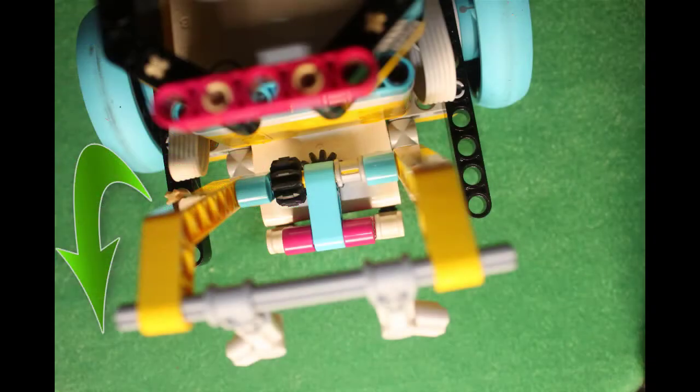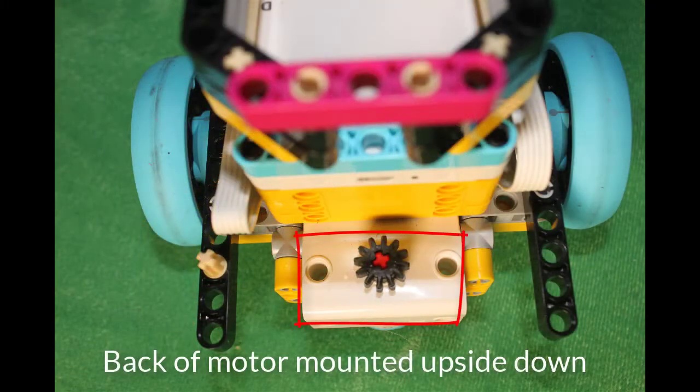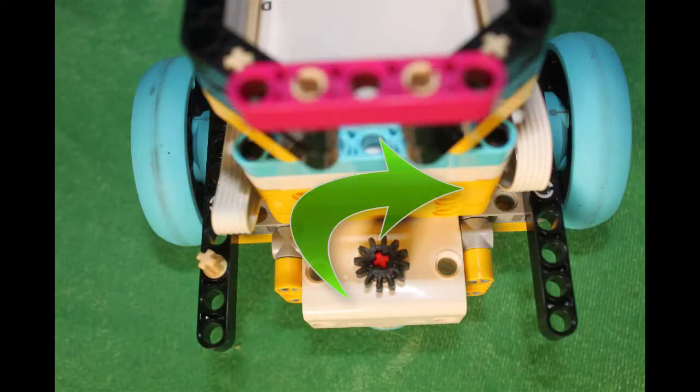To get the attachment arm to go down we need the gear on the motor to turn clockwise. But we're actually looking at the back of the motor so we need to tell the front of the motor to turn counterclockwise to get the gear to turn clockwise.